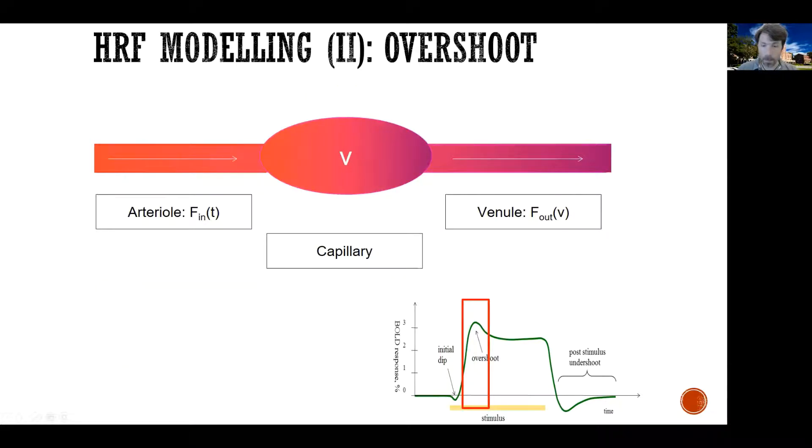Now, the second step is this big rise in the BOLD signal and then an overshoot. Now, the idea here is that, as we discussed earlier, as cerebral blood flow increases, it just results in a flooding of oxygen inside the venous side of the capillary and the draining vein.